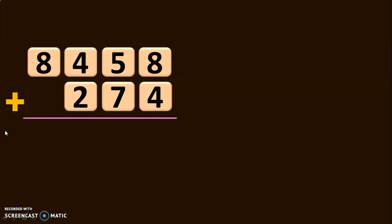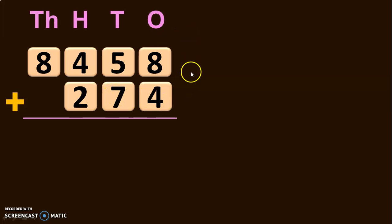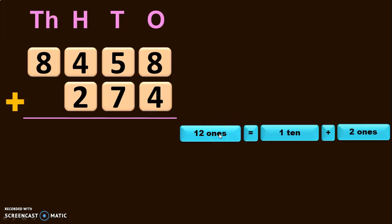Let us do the next sum. We have 8,458 plus a 3-digit number 274. First write down the place values. Next, start the addition from the ones place. 8 plus 4 will give you 12 ones. When you regroup 12 ones, it is 1 ten plus 2 ones. So retain the 2 ones in the ones place and carry over the 1 ten to the tens place.